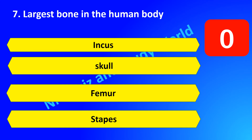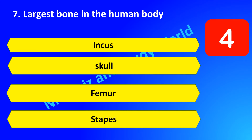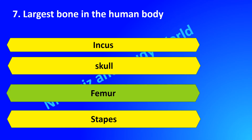Which is the largest bone in the human body? Is it incus, skull, femur, or stapes? The largest bone in the human body is femur and the smallest bone is stapes.